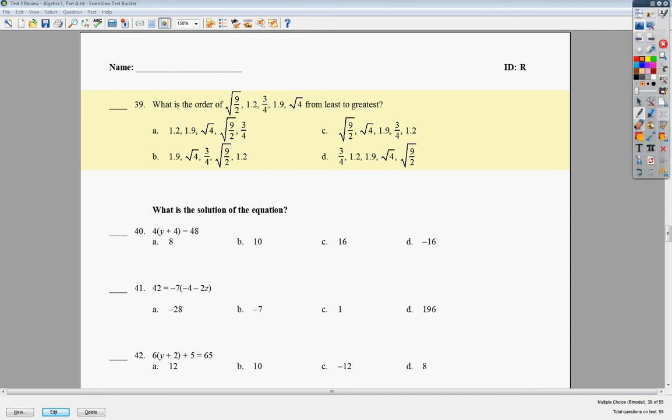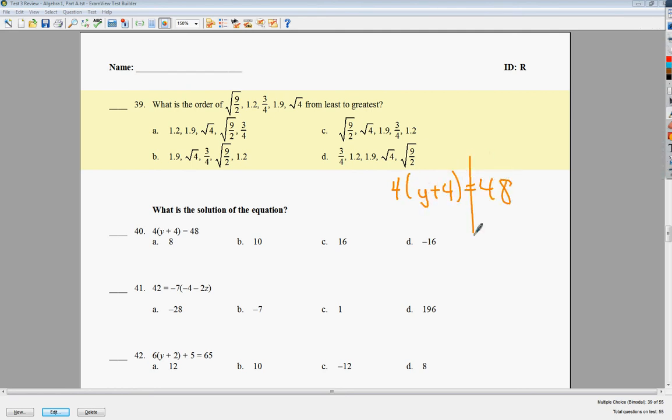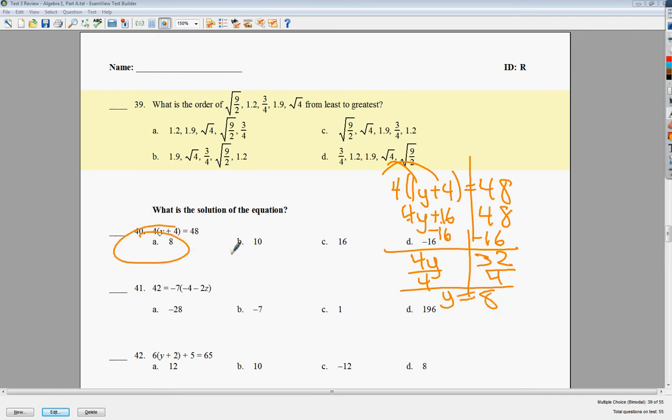Number 40. Number 40 is another solving equations question. I'm going to write it over here on the right. 4 times the quantity y plus 4 equals 48. Draw your line. Put your 1. Do your distributive. To get rid of plus 16, I need to subtract. Divide by 4 because this shows times. y is equal to 8. So the answer to number 40 is A.